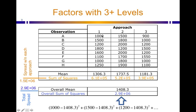So 1,000 minus the overall mean squared, 1,500 minus the overall mean squared, 1,200 minus the overall mean squared, all the way down until you get to 1,100 minus 1408.3 squared. Add all that up and that's called the total spread, or the total sum of squares, which is in this case 2.9 times 10 to the sixth.